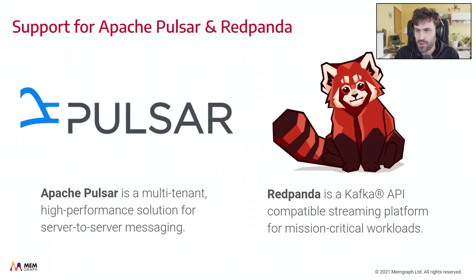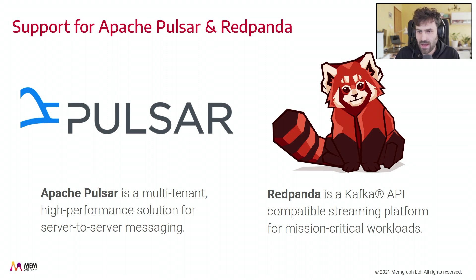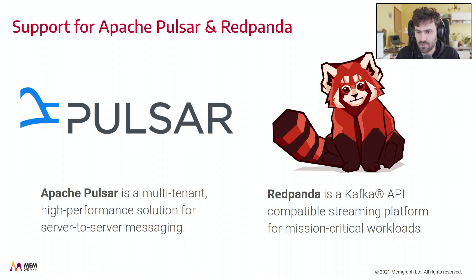There are two new streaming data sources: Apache Pulsar and RedPanda. Apache Pulsar is a multi-tenant, high-performance solution for server-to-server messaging. On the other side, RedPanda is a Kafka-compatible streaming platform for mission-critical workloads. Adding these two is great because now you can attach more data sources, build your graphs out of them, and run graph analytics on top.